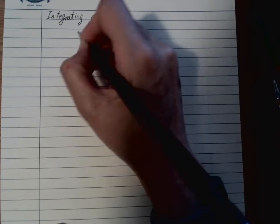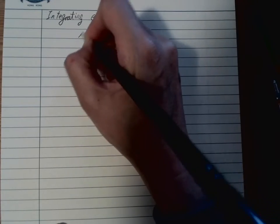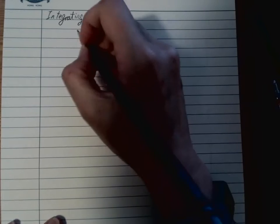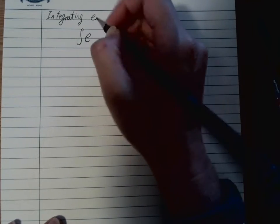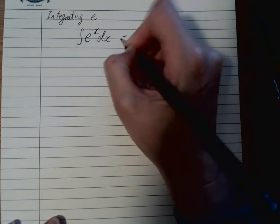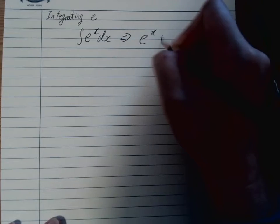Integrating e. e is exponent, you know that. So when we differentiate it, e^x always becomes e^x, so it's just the same as integral. So integrating e^x dx, you get e^x plus c.